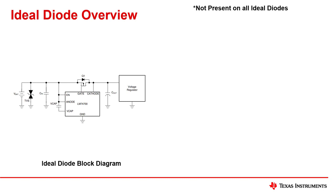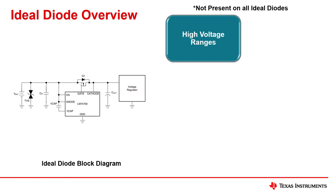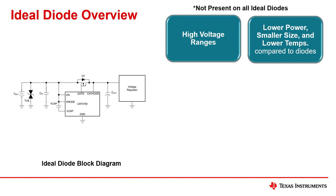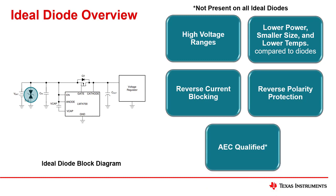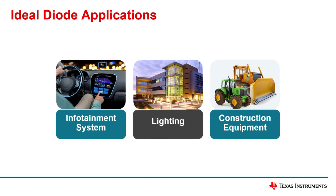Then we have ideal diodes, which are power switches that can replace diodes. Ideal diodes are generally used for input power protection. They can handle a broad range of voltage from 0 to 100 volts and have a broad range of current. Diodes generally have a high voltage drop, which results in power loss and higher temperatures, while ideal diodes work by monitoring an external FET and dissipate much less power, which also results in lower temperatures. They have key protection features, such as reverse current blocking, reverse polarity protection, and some are AEC qualified, which is useful in infotainment systems, lighting, construction equipment, and many other automotive electronics.